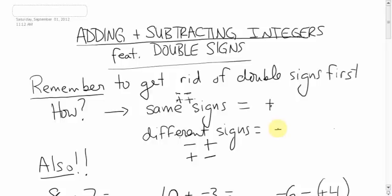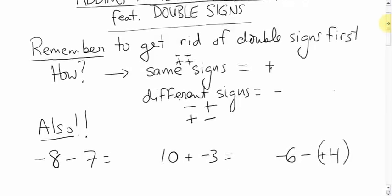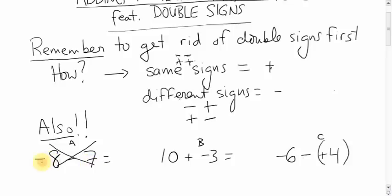People get confused about when they're actually looking at a double sign. Here are three questions — A, B, and C. Which of these three do you think show double signs? Pause and think about it. Okay — does A have double signs? Well, there are two signs but they're not considered a double sign because the two signs are not next to each other. So this is not a double sign. That one, by the way, is -8 + (-7) = -15, but I wasn't asking for that.